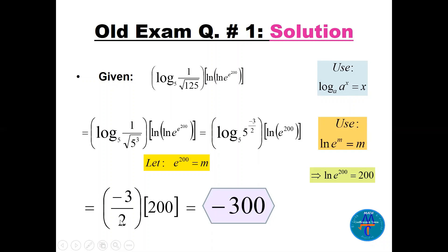For the second bracket: ln of ln of e^(e^200). Let m = e^200, so this is ln of e^m. We know ln(e^m) = m, so the inner bracket becomes e^200. Then ln(e^200) = 200 by the same rule.